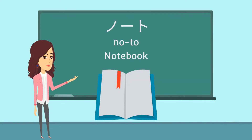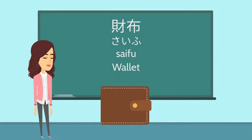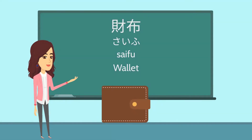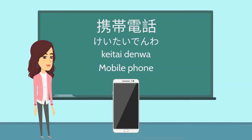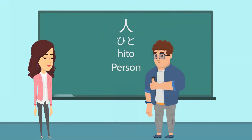Note: 財布 (saifu - wallet), 携帯電話 (keitai denwa - mobile phone), 人 (hito - person).